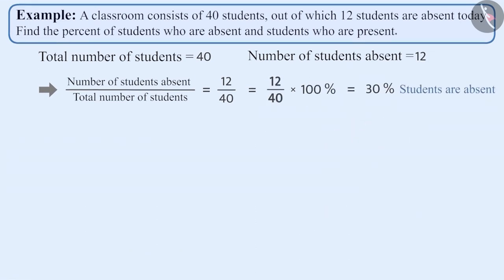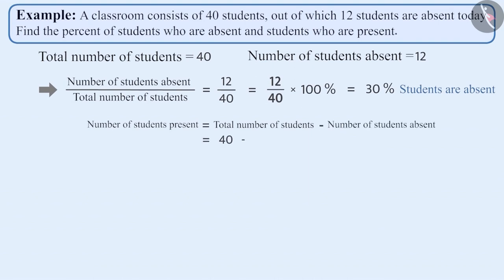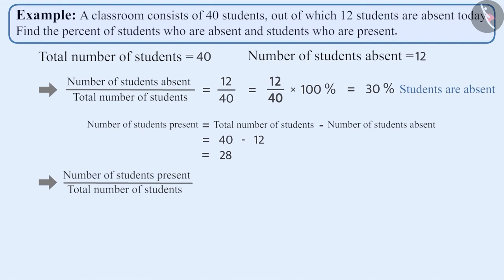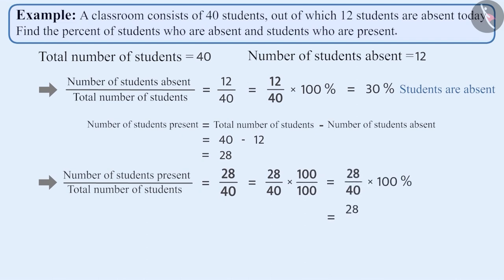The number of students present equals the total number of students minus the number of students absent, which is 40 minus 12, which is 28. So the number of students present is 28 by 40 part of the total. Let us express it in percent: 28 by 40 equals 28 by 40 into 100 by 100, which equals 28 by 40 into 100 percent, which equals 28 into 100 by 40.